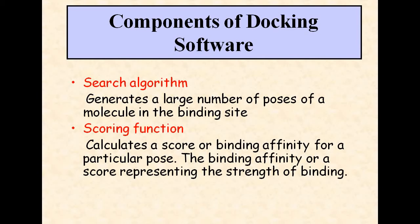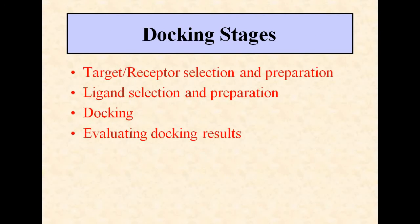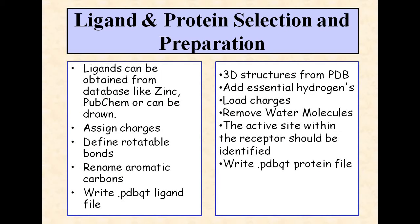There are four main docking stages: target receptor selection and preparation, ligand selection and preparation, docking, and evaluating docking results. Ligands can be obtained from databases like ZINC, PubChem, or drawn using ChemSketch. Ligands are then assigned charges, rotatable bonds defined, aromatic carbons renamed, and the .pdbqt ligand file written, as in the case of AutoDock software.